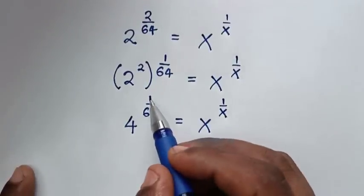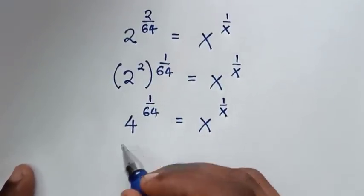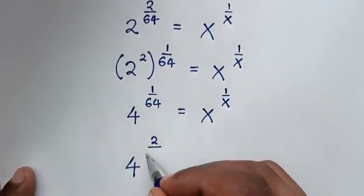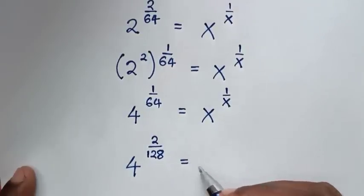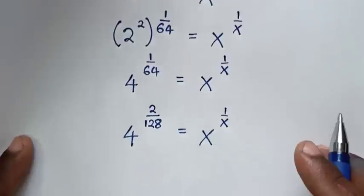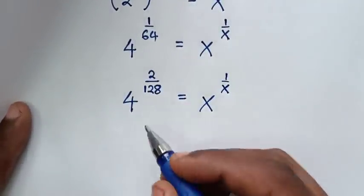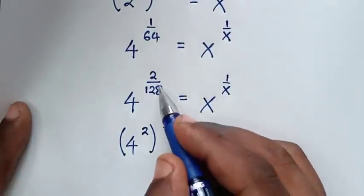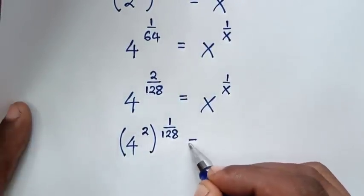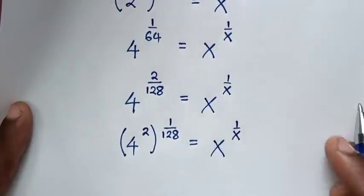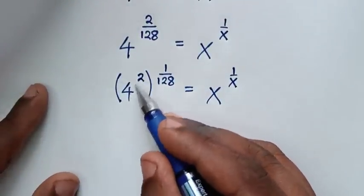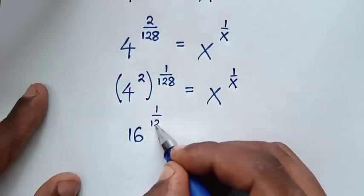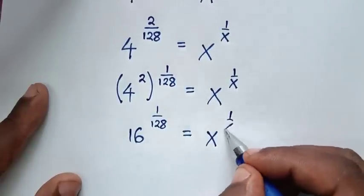Again, we multiply the numerator and denominator of the power by 2: 1 times 2 is 2 over 64 times 2 is 128. Then we take the 2 inside the bracket: 4 power of 2 inside gives 4 squared, which is 16. So we have 16 power of 1 over 128 is equal to x power of 1 over x.